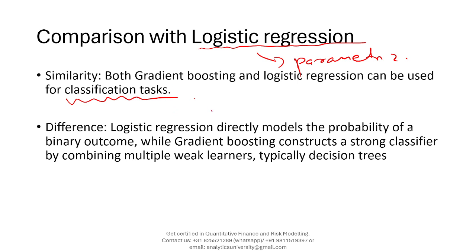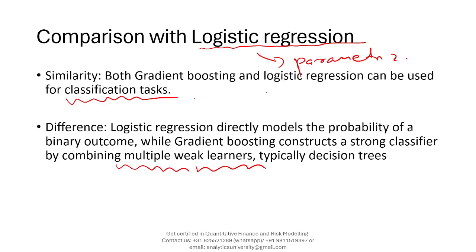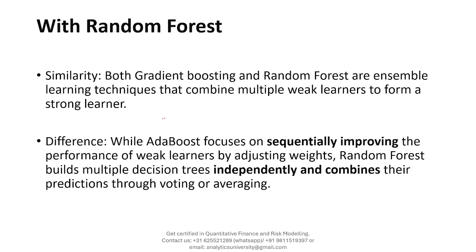The idea is to combine weak learners or weak models, aggregate them, and make better predictions. This aggregation philosophy can also be applied to other types of models — you can build many logistic regressions and combine them, or use linear regression as well.